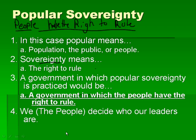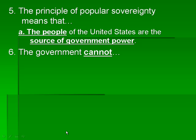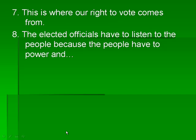We the people decide who our leaders are, and that's how we have the power — the power to choose who is leading us. The principle of popular sovereignty means that the people of the United States are the source of the government's power because we put them in power. The government cannot do anything without the consent of the people. Without us choosing them and putting them there to run the government, they can't do anything. If they make bad decisions, they can be removed. This is where our right to vote comes from.